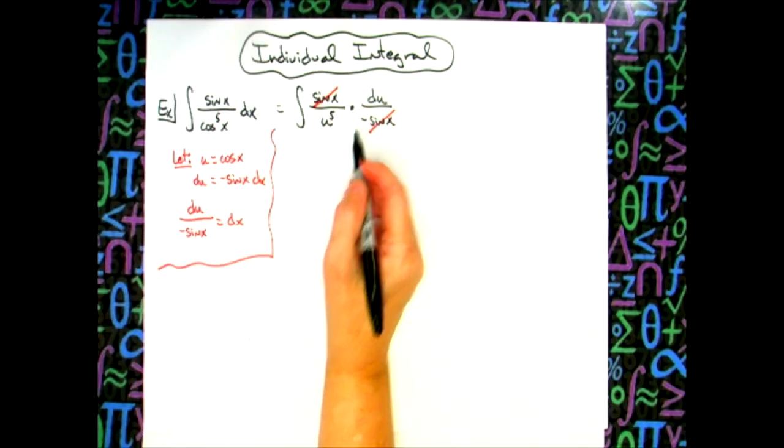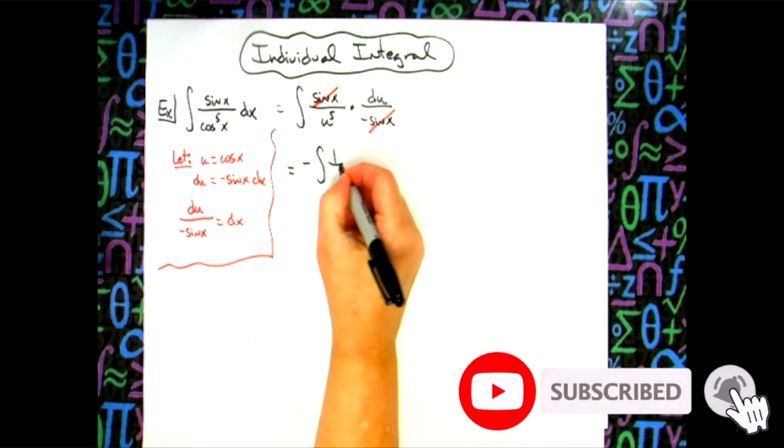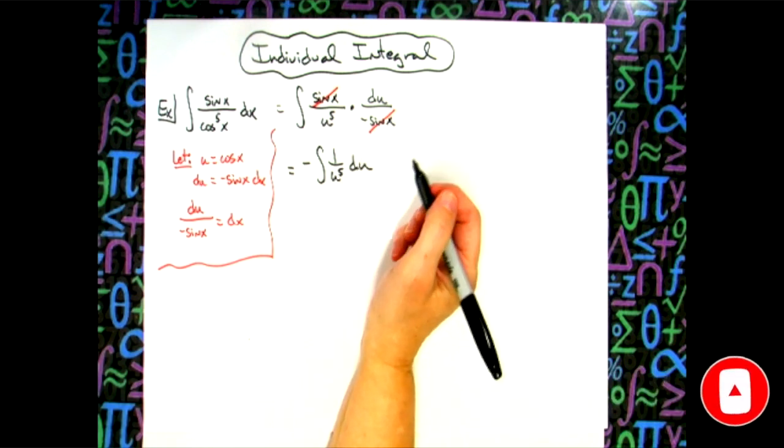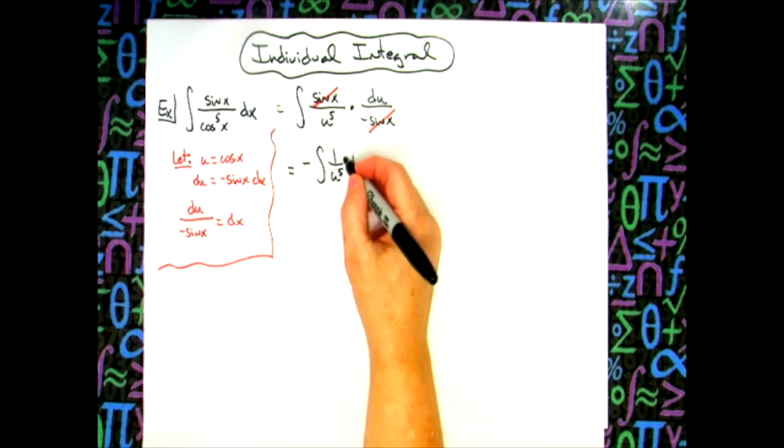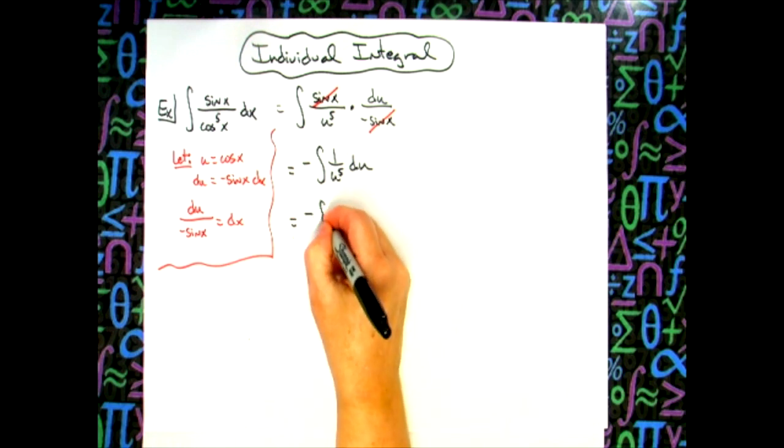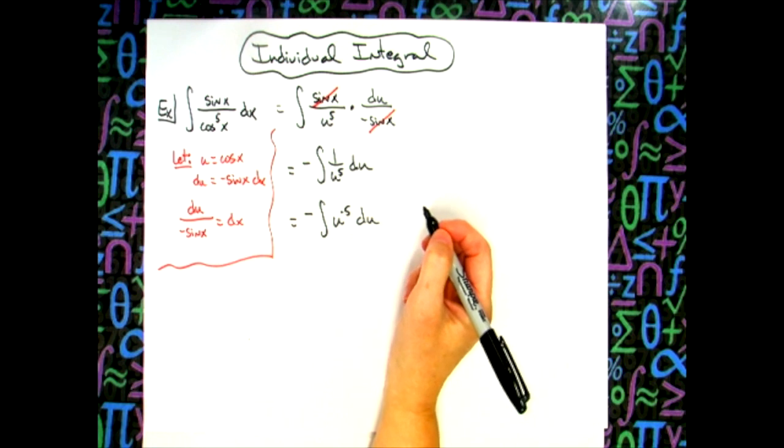The negative here is going to come out in front so we'll have negative the integral of one over u to the fifth du. Pretty straightforward integral. We need to use exponents here so we need this moved up so that we will make it u to the negative five. So we'll have negative the integral u to the negative five du.